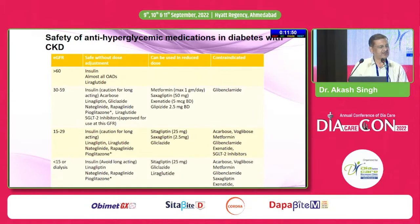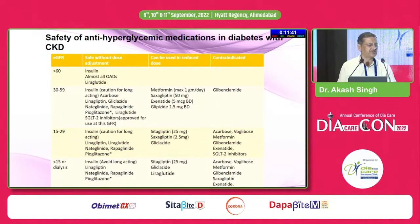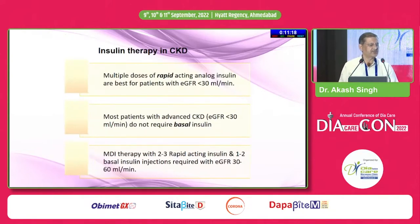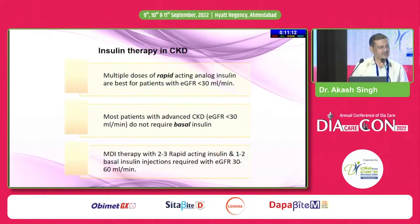Pioglitazone can be used at all stages but causes weight gain and fluid retention, so it is not favored. GLP-1 receptor agonists can be used, but once eGFR is very low, nausea and poor oral intake may limit their use. DPP-4 inhibitors — some do not require dose modifications while others do, and they should be used accordingly. For insulin therapy in CKD patients, as eGFR goes very low and the patient nears end-stage renal disease, basal insulin may not be required and the patient can be managed with bolus insulins only.